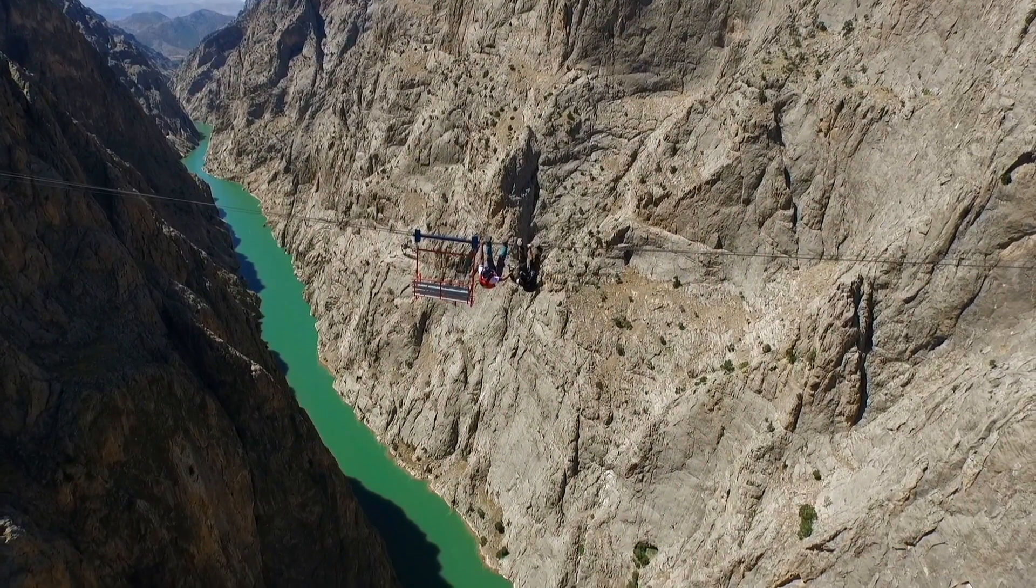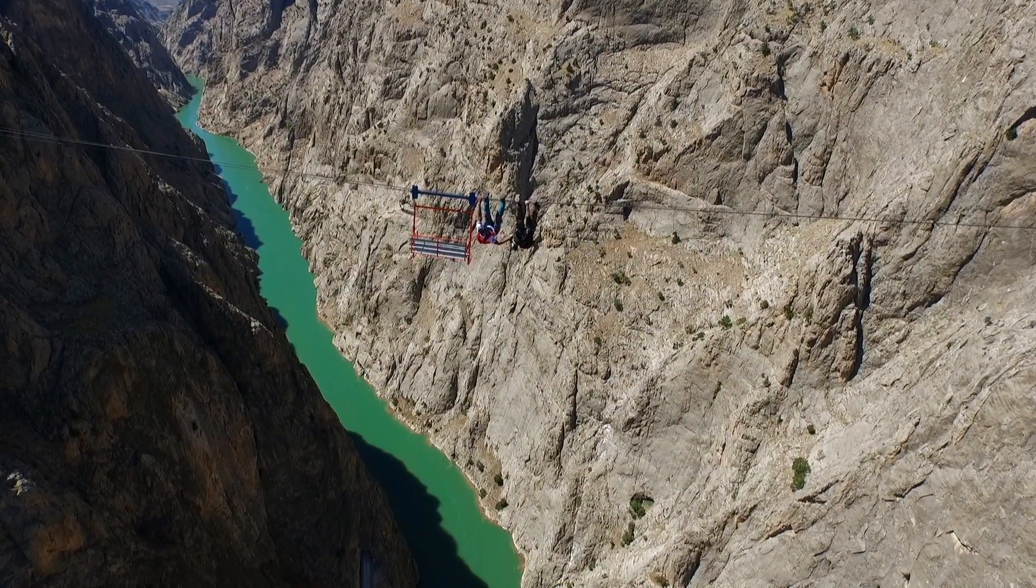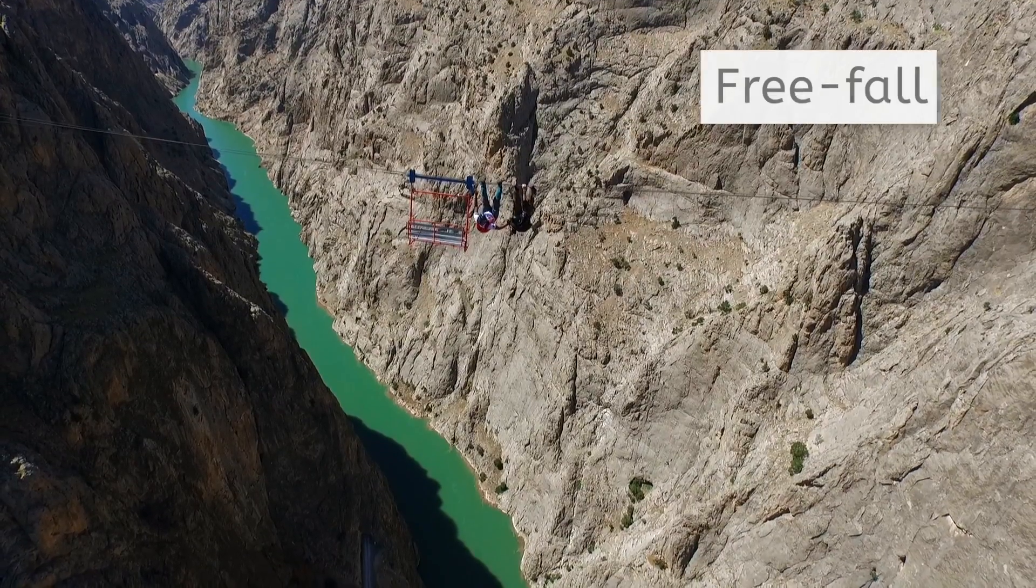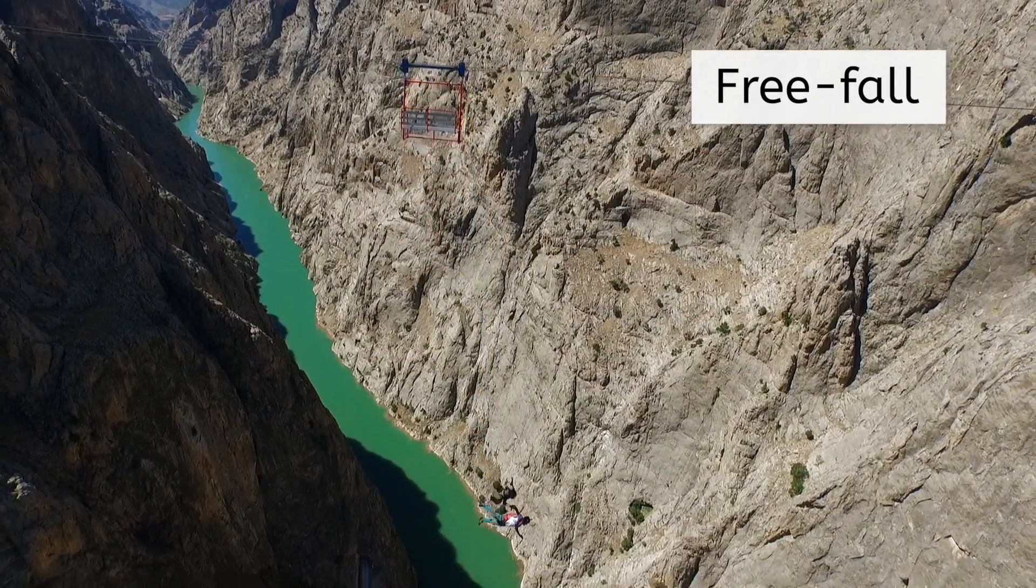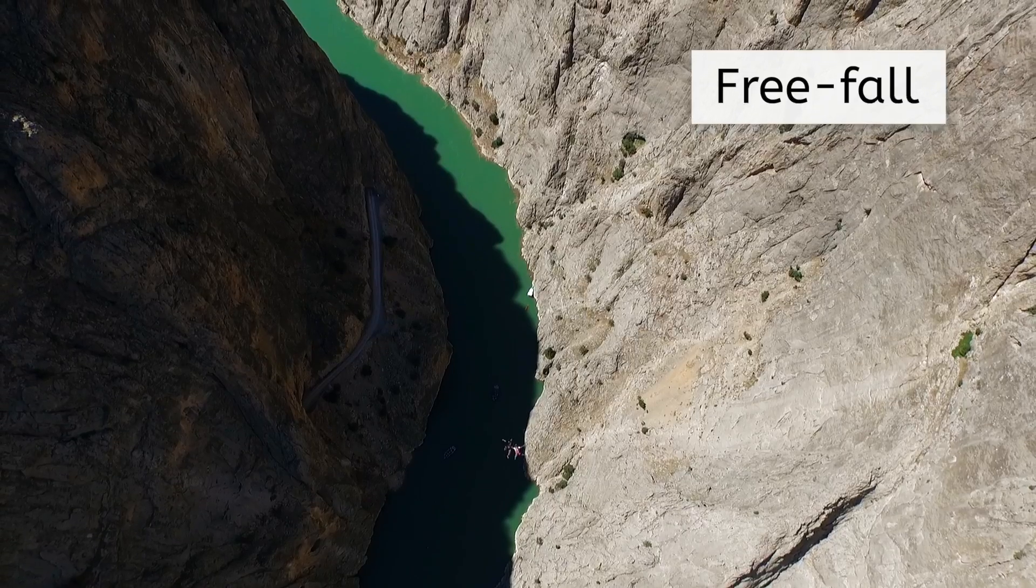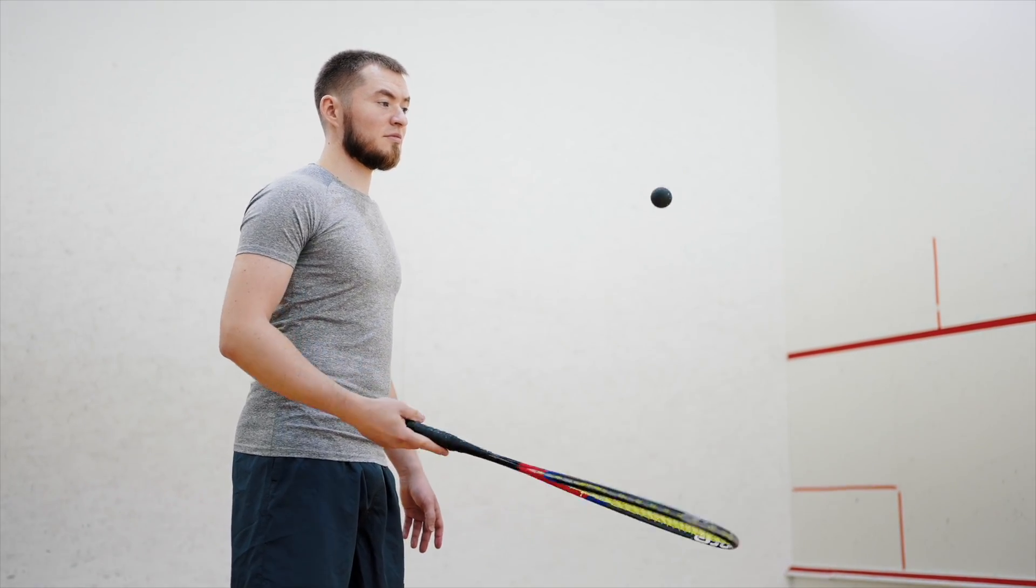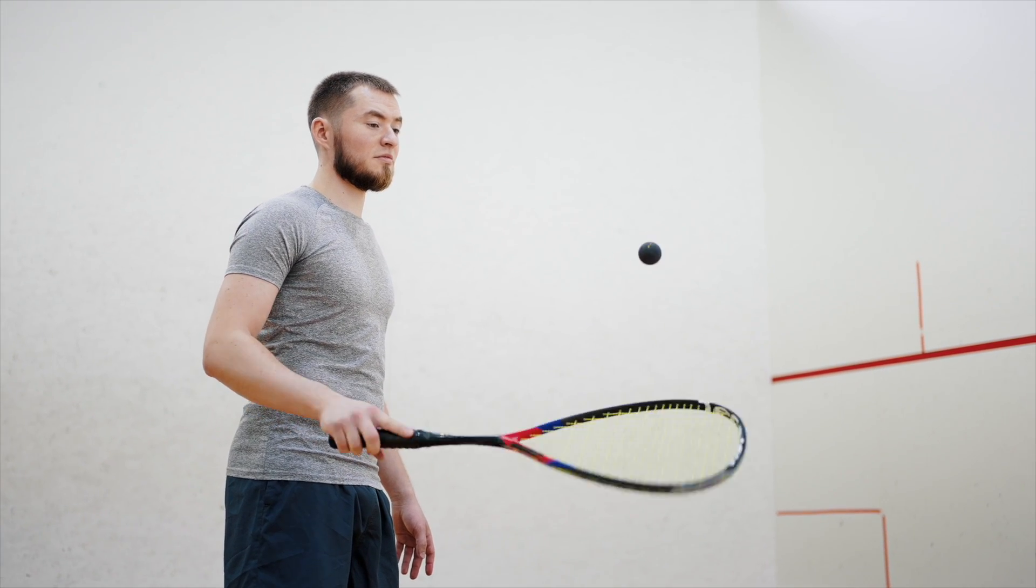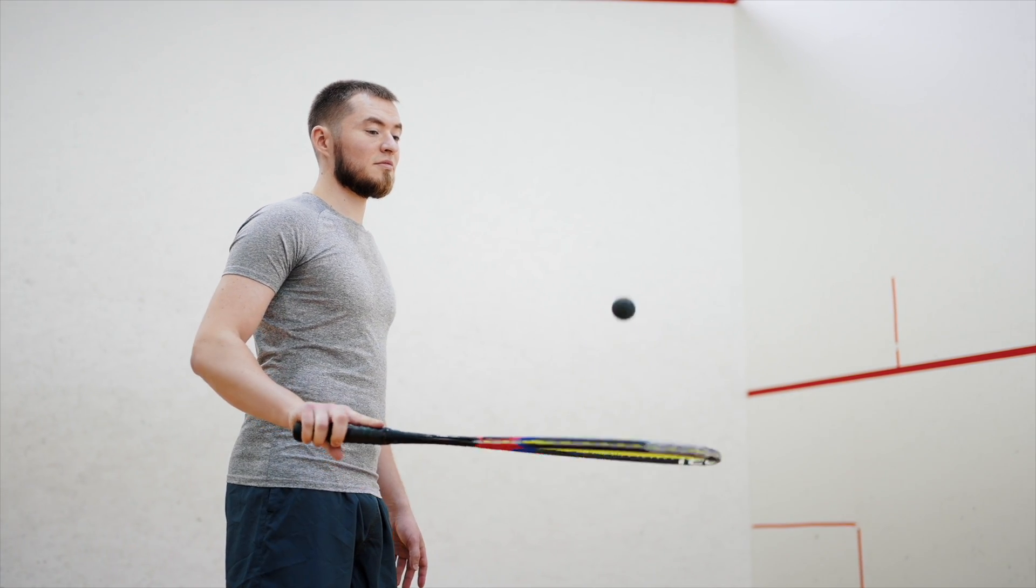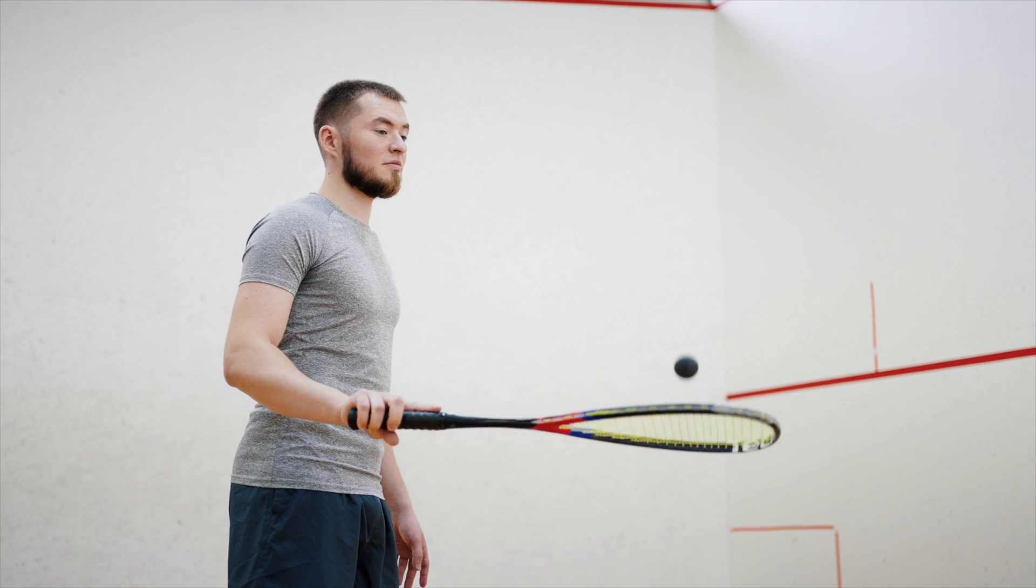Do you remember the word for when an object is falling due to gravity? Free fall! Projectiles can be in free fall going both up and down. This man's racket puts an upward force on the ball that gives it a launch velocity. But once it leaves his racket, the only force acting on it is gravity.